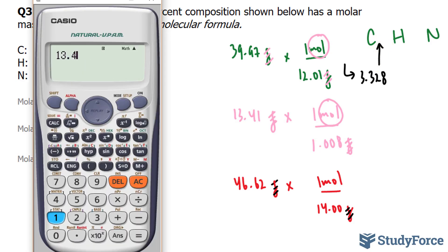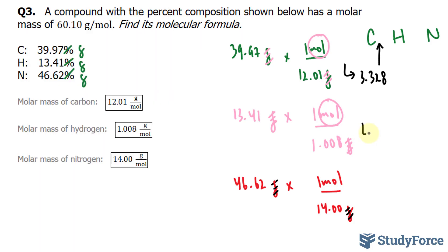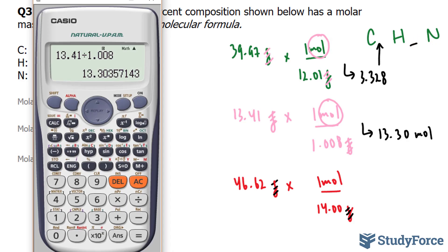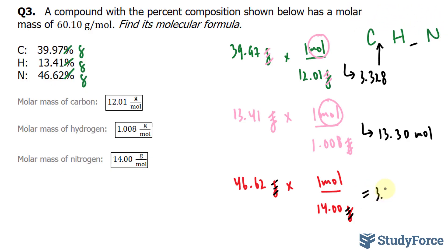I'll divide 13.41 by 1.008, and that gives me approximately 13.30, 13.30 moles, and that will eventually go here. And finally, 46.62 divided by 14, that gives me 3.330, 3.330, and I'll place that right there.